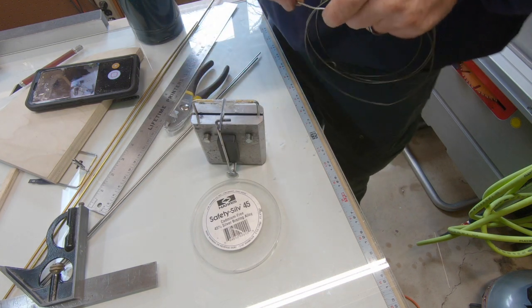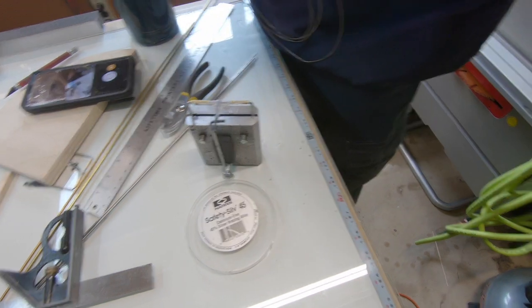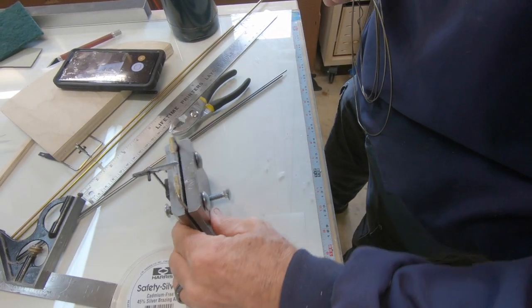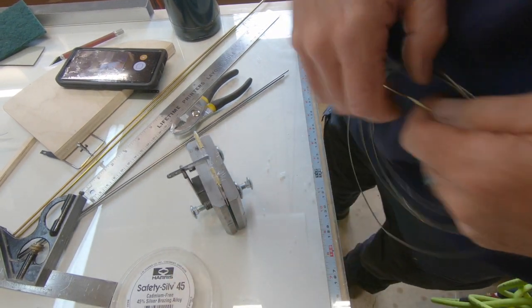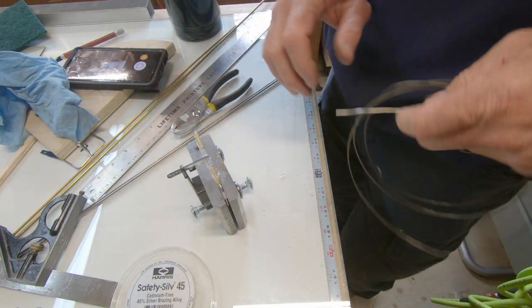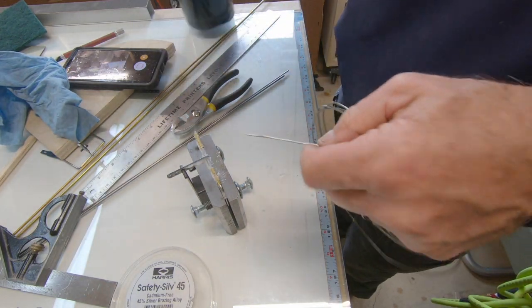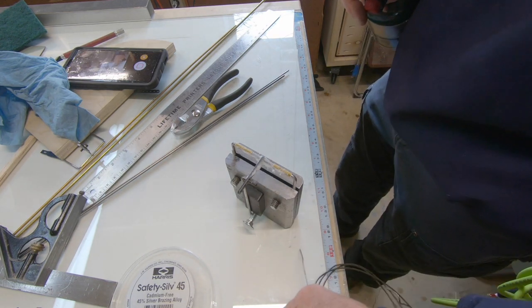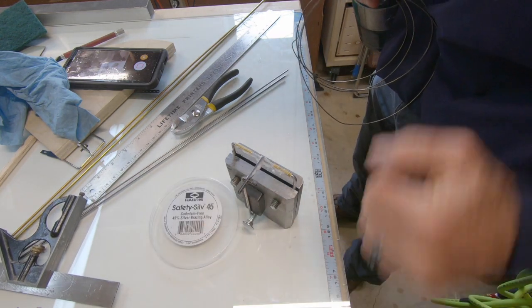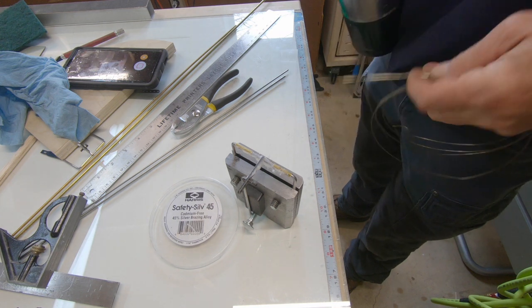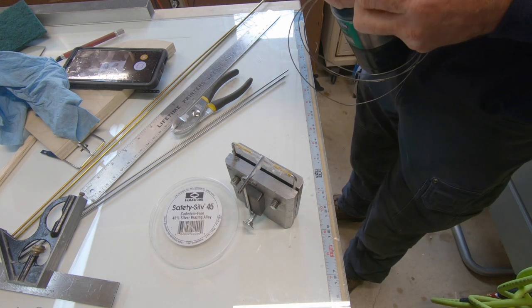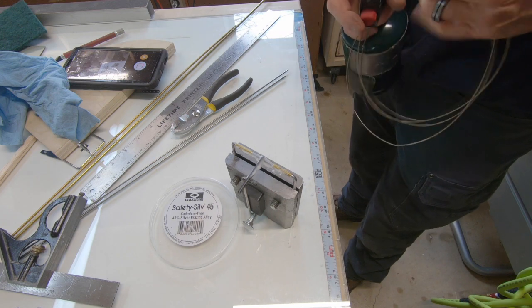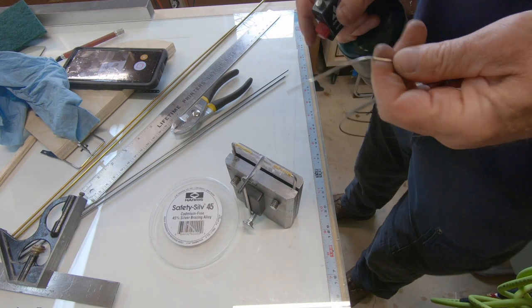And what I'm going to do is I'm going to heat this up to where it's going to get sort of, I don't know how you call it, sort of clear looking. The flux is going to start to flow. And then once the metal starts to turn sort of an orange-ish red is where I'm going to hit it with this wire.